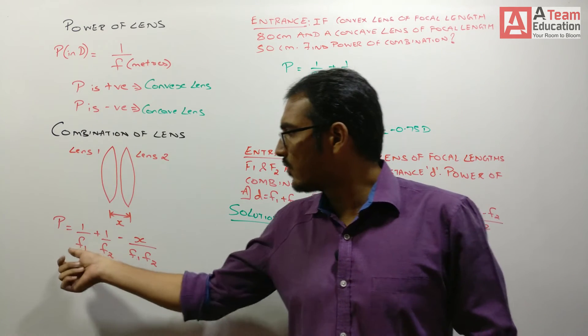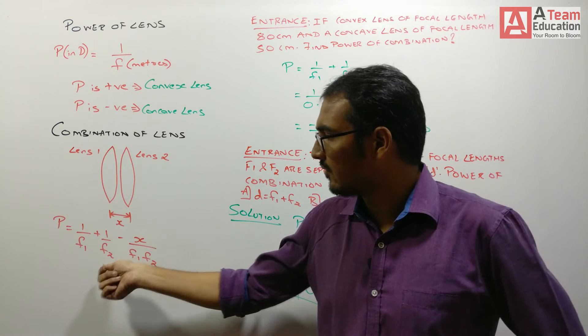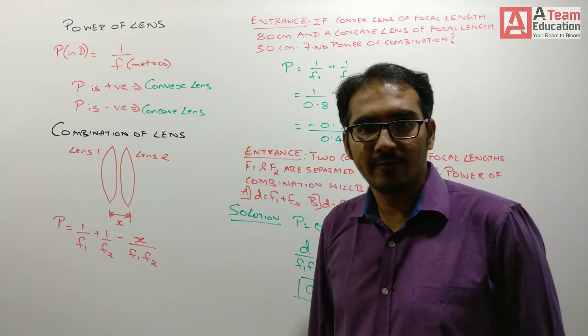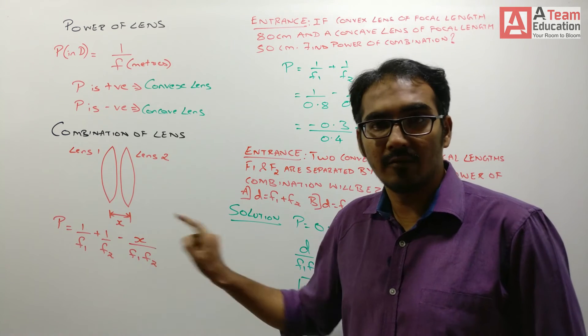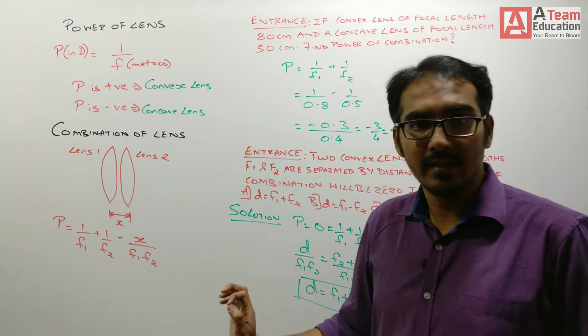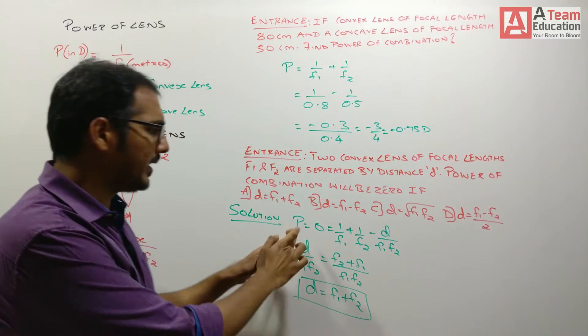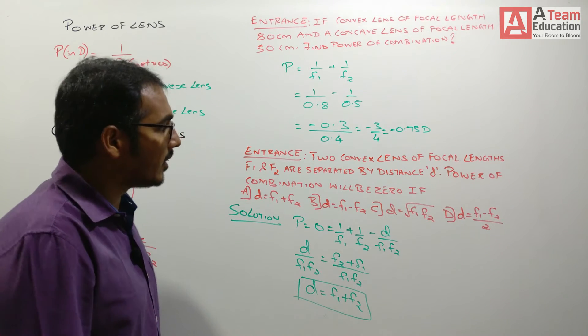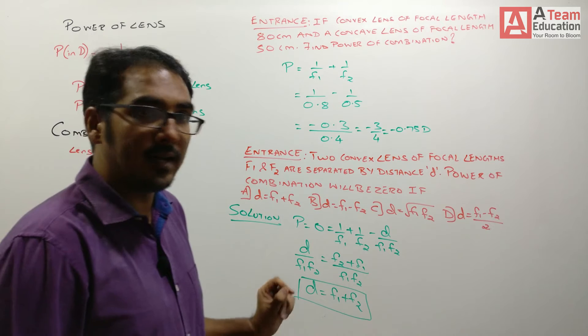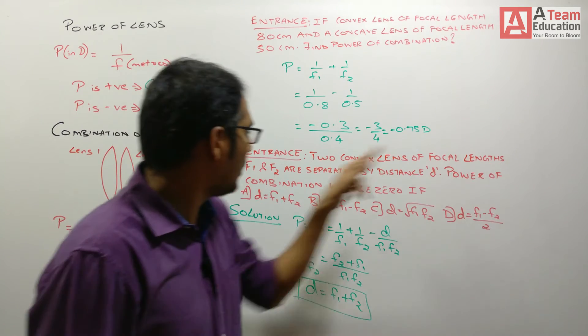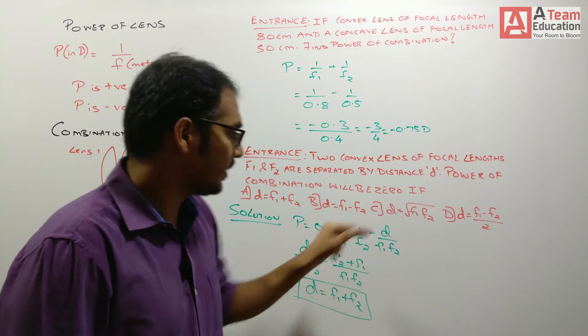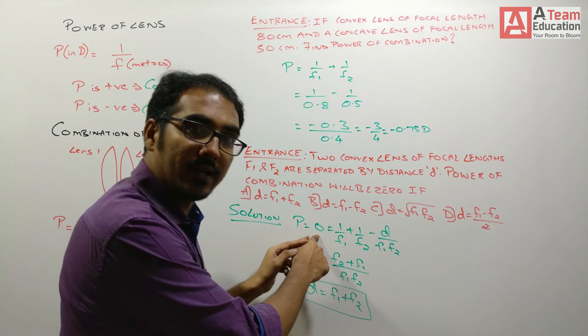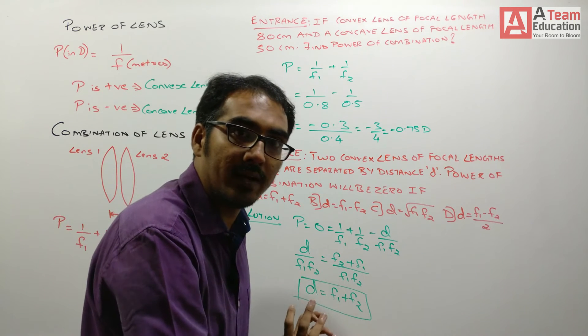We just studied power of combination: 1 upon f1 plus 1 upon f2 minus x upon f1 f2. Here the separation of the two lenses is given as D. Rest of the formula is same. So P equals 1 upon f1 plus 1 upon f2 minus D divided by f1 f2. Now there is a very important word given here. Power of combination will be 0, meaning you have to equate power to zero.